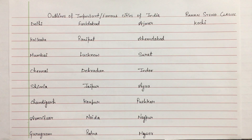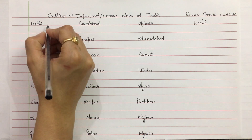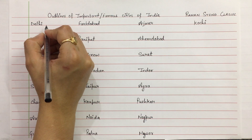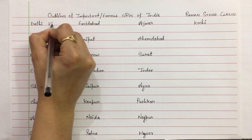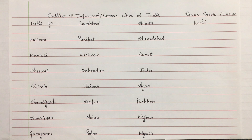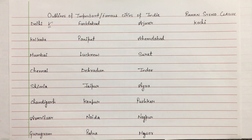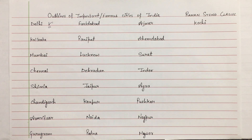Now let's see Delhi. Delhi, on the line. Under every noun, you will have to draw these two lines so that you will know the difference from normal outlines.